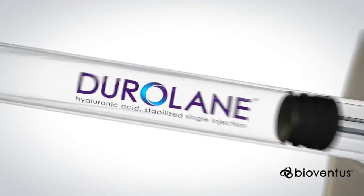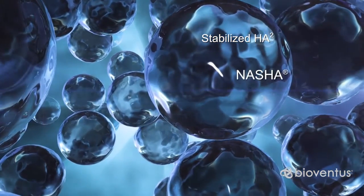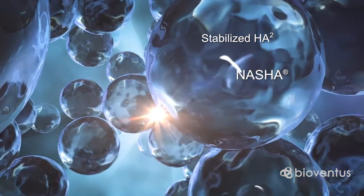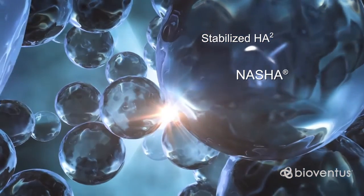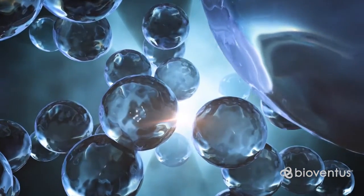Duralane is a highly viscous hyaluronic acid gel stabilized by NASHA technology. The process joins the hyaluronic acid molecules to one another, changing the physical properties so that it forms a three-dimensional gel.